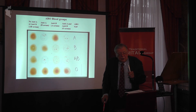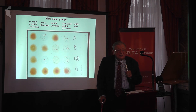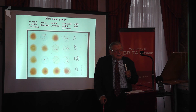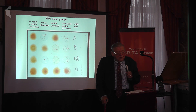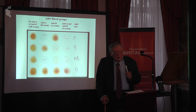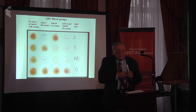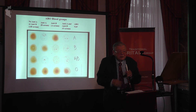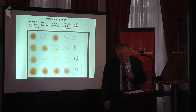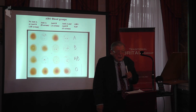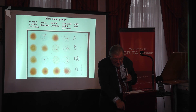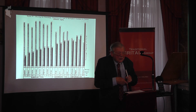The ABO types were the first clear-cut genetic differences defined in human populations, in the year 1900 by Landsteiner, and they formed the basis for the beginning of studies of genetic differences between populations. You could ask: what are the frequencies of these genetic types in different populations, and what might they tell us about those populations?